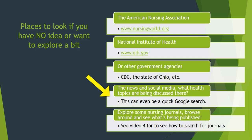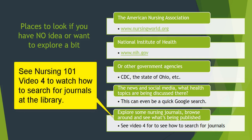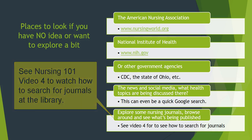This is especially useful if you're looking at a specific location. If you want to know what health topics are being discussed in a specific region — like Ohio — look at local newspapers and media outlets to see what they're talking about. A quick Google search can work for that too. You can also explore nursing journals, browse around, and see what's being published. Look at the video if you want to see how to search for journals.